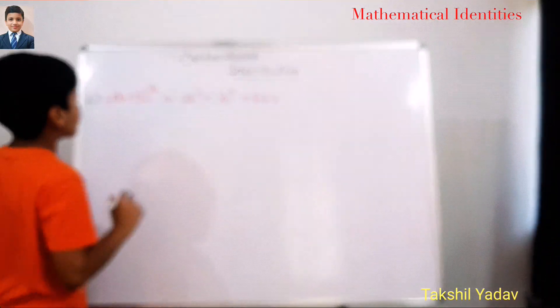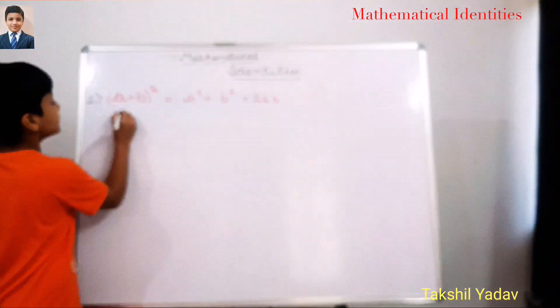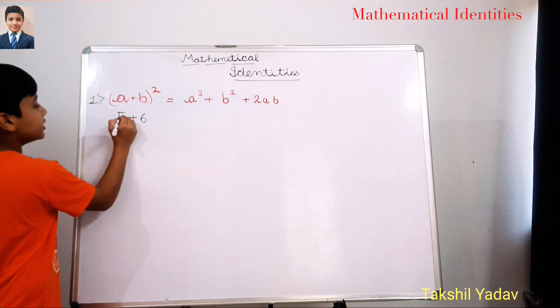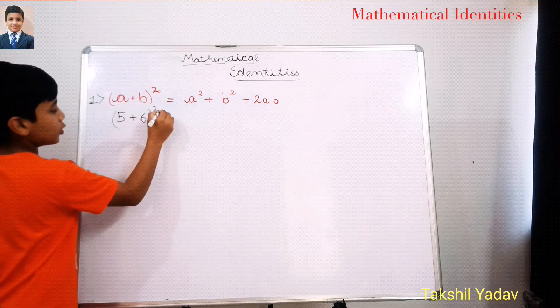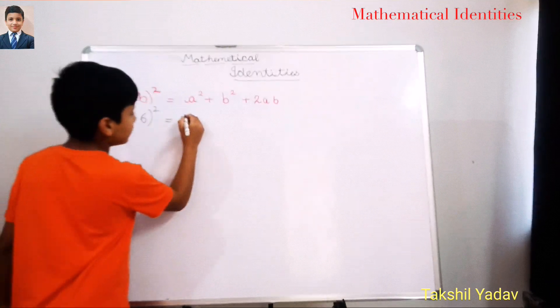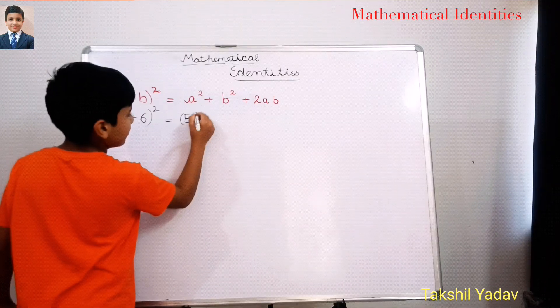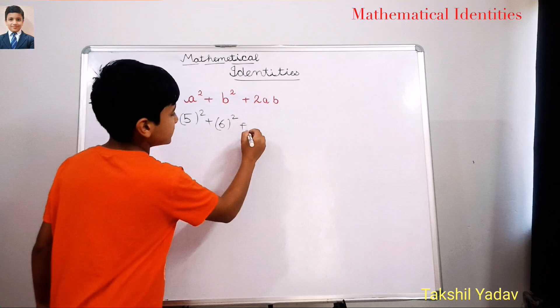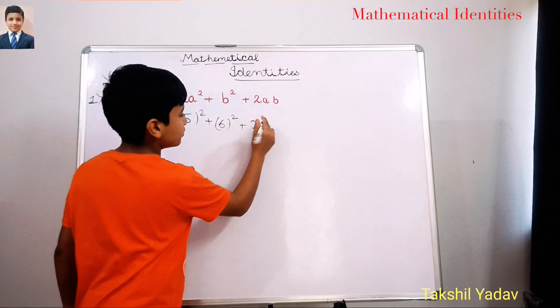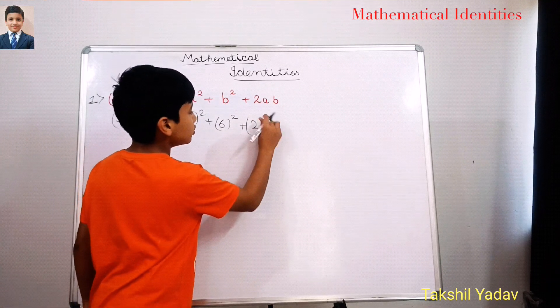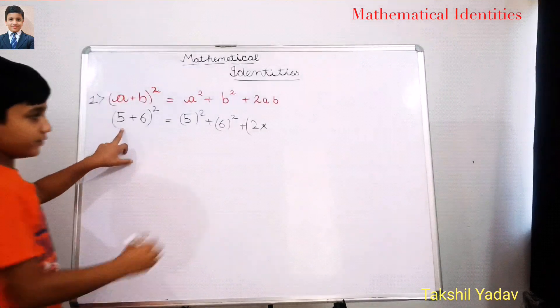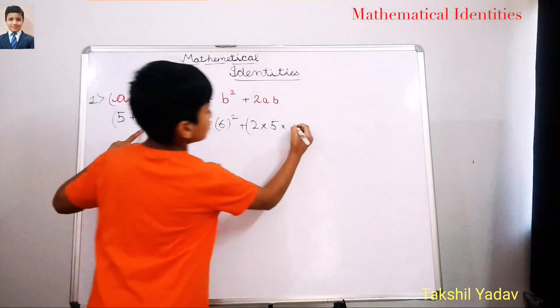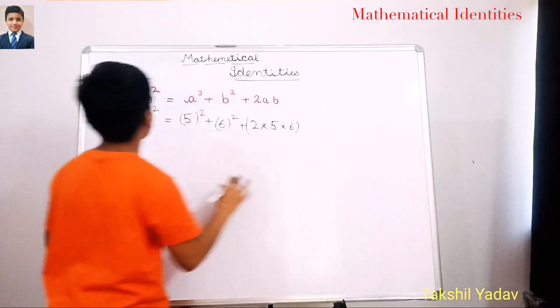So a plus b, I will take the value of a as 5 and the value of b as 6. Right, so here we get 5 plus 6 whole square should be equal to 5 square plus 6 square plus 2 into a and here we have a as 5 and b is 6 so 2 into 5 into 6.